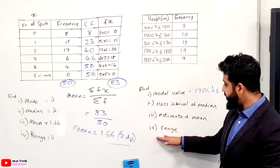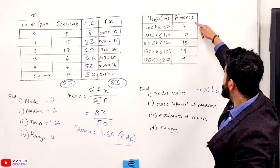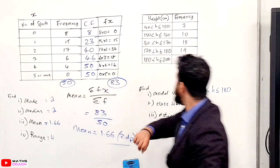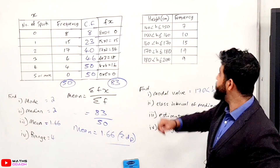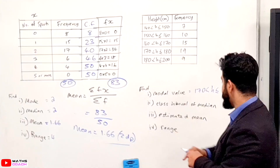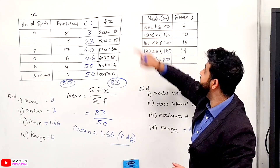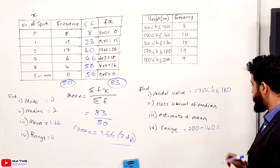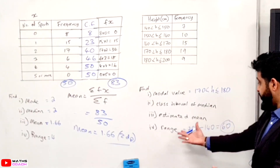Let's find the range. The range is the highest take away the lowest. Here everything is filled in — there is no zero like we had before. The highest value we could potentially have is 200, and the lowest is at least 140. So 200 take away 140 gives us 60. The range is 60.